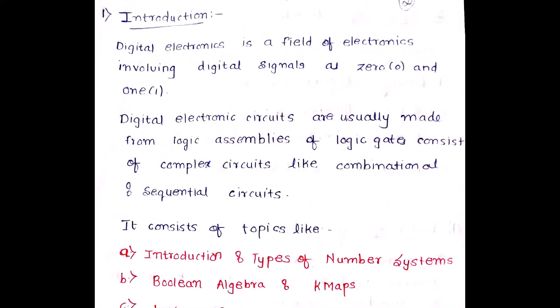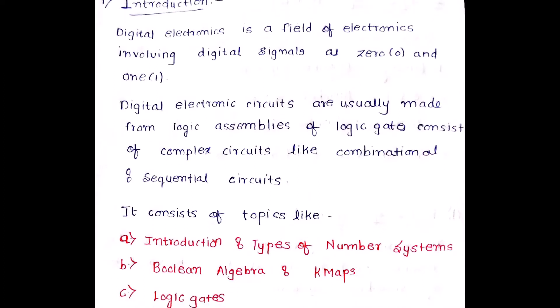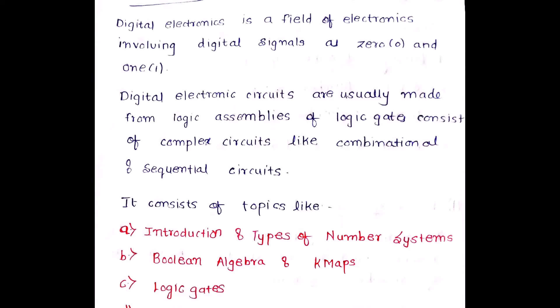So what is digital electronics? Digital electronics is basically a field of electronics involving digital signals as zero and one. When we talk about digital electronics, all complex signals — every input and output — narrows down to zero and one. There will be many circuits and complex signals, but everything revolves around zero and one.